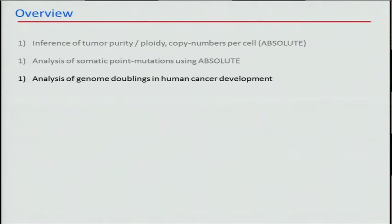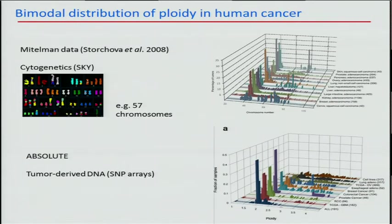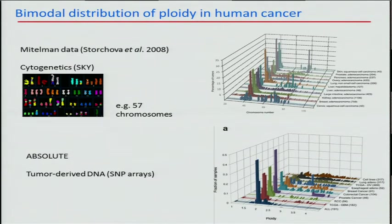Now I'm going to talk about inferring genome doublings in human cancer development from these absolute allelic copy number estimates. Genome doubling had been widely speculated about for a long time. If you look at cytological data, there's clearly a bimodal distribution of ploidy by FACS or spectral karyotyping, suggesting that many cancers pass through a tetraploid intermediate. We can see that our ploidy estimates recapitulate qualitatively this bimodal ploidy distribution.